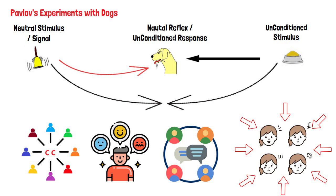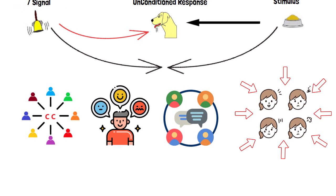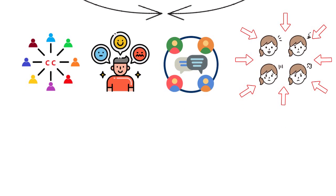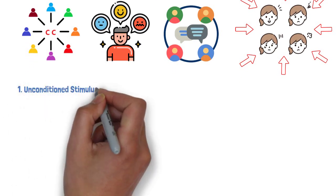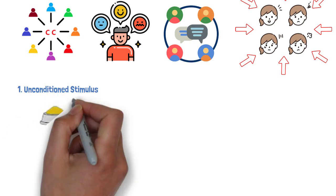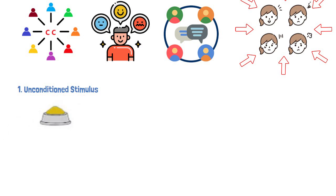Classical conditioning uses a few different terms to help explain the learning process. Knowing these basics will help you understand the concept better. 1. Unconditioned stimulus is a trigger that leads to an automatic response. The food.